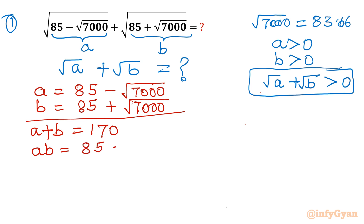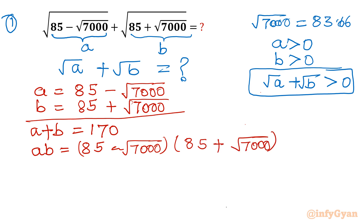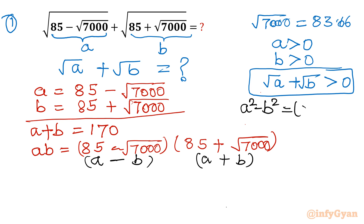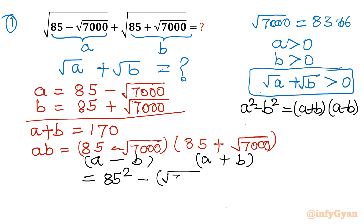For a times b: (85 minus square root 7000) times (85 plus square root 7000). Using the difference of two squares identity — a squared minus b squared equals (a+b)(a−b) — this becomes 85 squared minus (square root 7000) squared, which is 7225 minus 7000. The difference is 225.